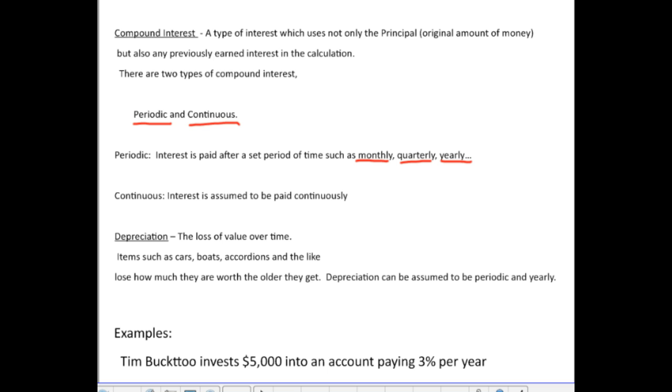The next idea is the word depreciation. Depreciation means that you're going to lose value over time. Items such as cars, boats, accordions, things like that. Well, once you buy them, does it make sense that the older they get, the less value they're going to be? Because you're using them, right? So they lose value. We say that they're depreciating. In this class, we'll always assume that everything depreciates periodically, and that's only every year, once a year. Things only depreciate once a year.